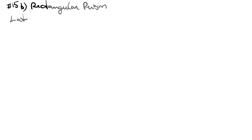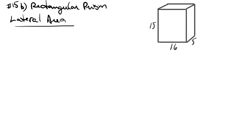15b. This time we're working with a rectangular prism and we'll start by looking for the lateral area. Looking at the diagram, we want the front face, the comparable back face, and both of the sides.